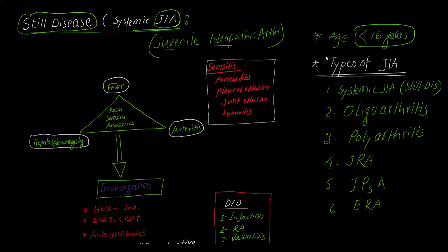The most important types of Juvenile Idiopathic Arthritis are: number one, Systemic JIA, also known as Still's disease; number two, Oligoarthritis JIA with four or fewer joints involved; number three, Polyarthritis with five or more joints; number four, Juvenile Rheumatoid Arthritis occurring before 16 years; number five, Juvenile Psoriatic Arthritis; and number six, Enthesitis Related Arthritis.